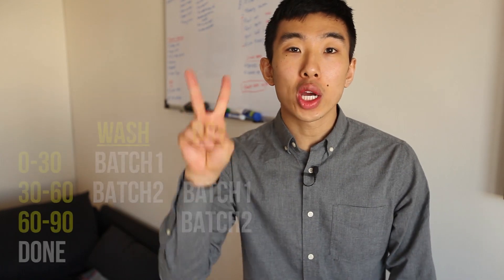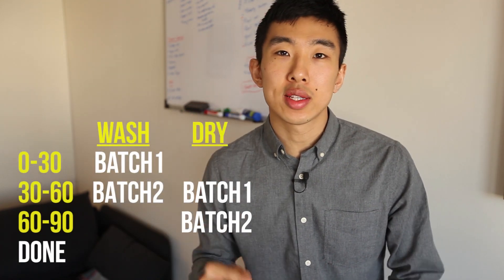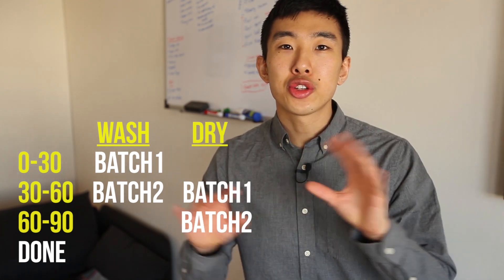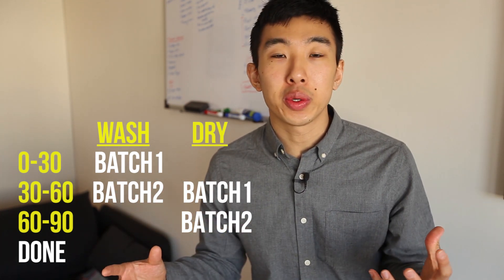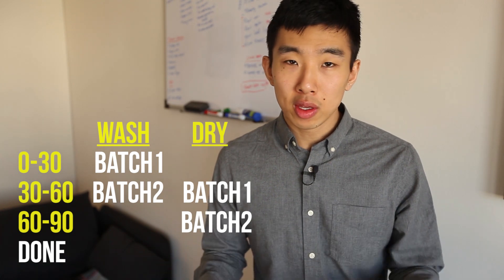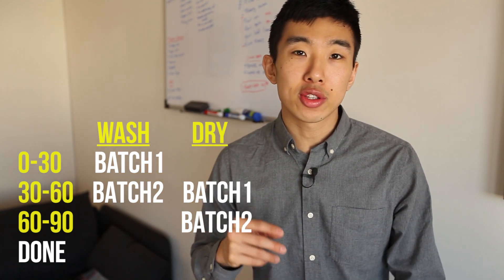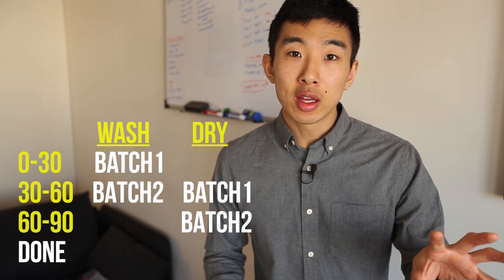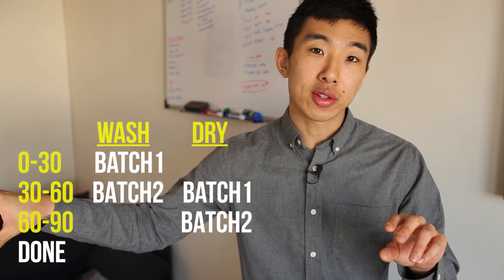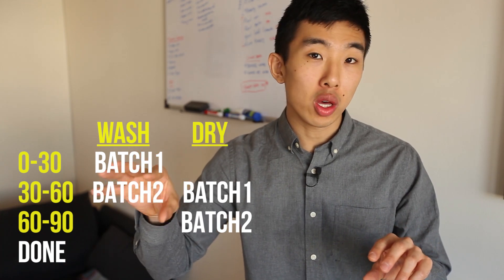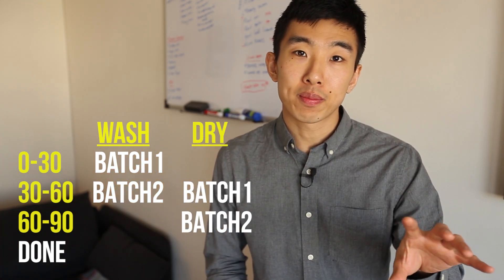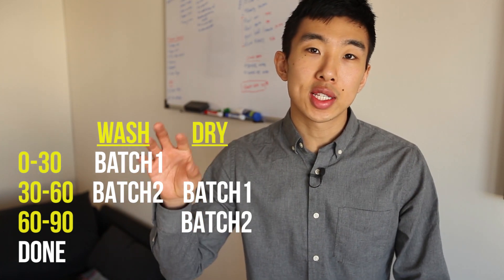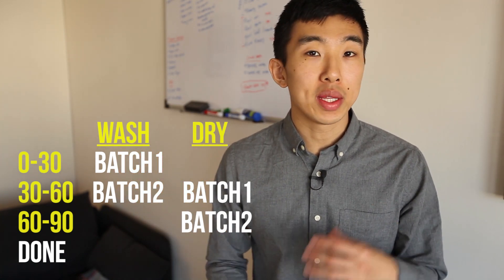Now let's try washing two batches of clothes and see what's the most intuitive and efficient way to do this. We'll take our first batch of clothes and start washing it — that takes 30 minutes — and when that's done we're going to put it in the dryer, but then we can start taking our second batch of clothes and start washing that as well, while the first one is drying. After that's done, the first set is finished and all we have to do is take our second set of clothes and dry them. This whole process actually takes 90 minutes.